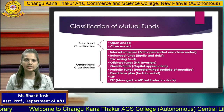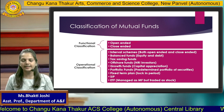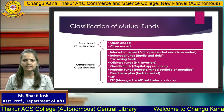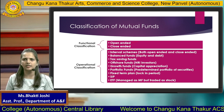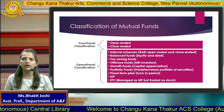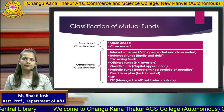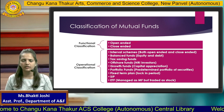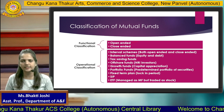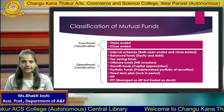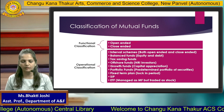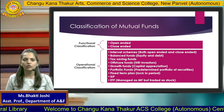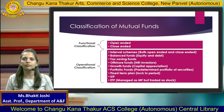First is the interval scheme. An interval scheme is a balance or mixture of both open-ended and close-ended funds — you can keep a certain minimum amount as a lock-in amount, and the remaining money you can anytime withdraw or put in. Such a scheme is known as an interval scheme. Second is the balanced fund. Any type of fund is categorized into equity and debt, and when there is a mixture of equity and debt, such a fund is known as a balanced fund.